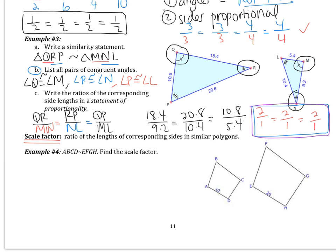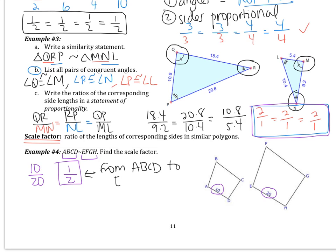In example 4, ABCD is similar to EFGH. Find the scale factor. I only have two sides to compare. I know that 10 and 20 correspond — AD corresponds to EH from the similarity statement. So my scale factor would be 10 over 20, which is 1/2. This is called the scale factor from ABCD to EFGH. In the numerator is ABCD and in the denominator is EFGH. Whichever one comes first goes in the numerator.